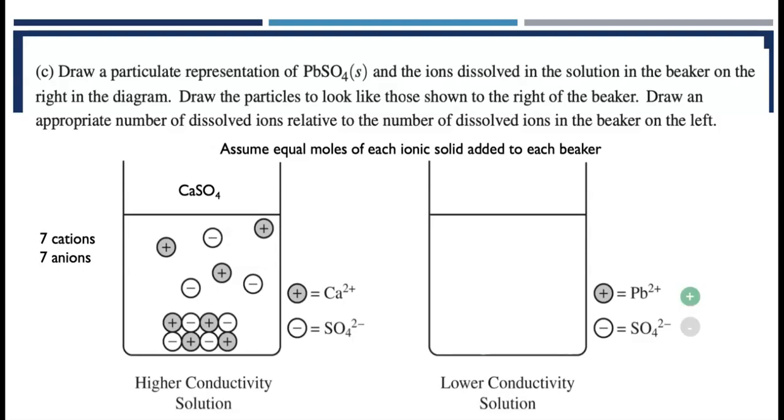So I'm going to draw my lead ions in green and my sulfate ions in gray because it was just more interesting to me that way. But the idea here that you really need to show with your particle level diagram is that there are fewer ions in solution for the lead-tooth sulfate sample. If I have a total of seven cations and seven anions, more of them are going to still be solids in the sample and fewer of them are going to be in solution.